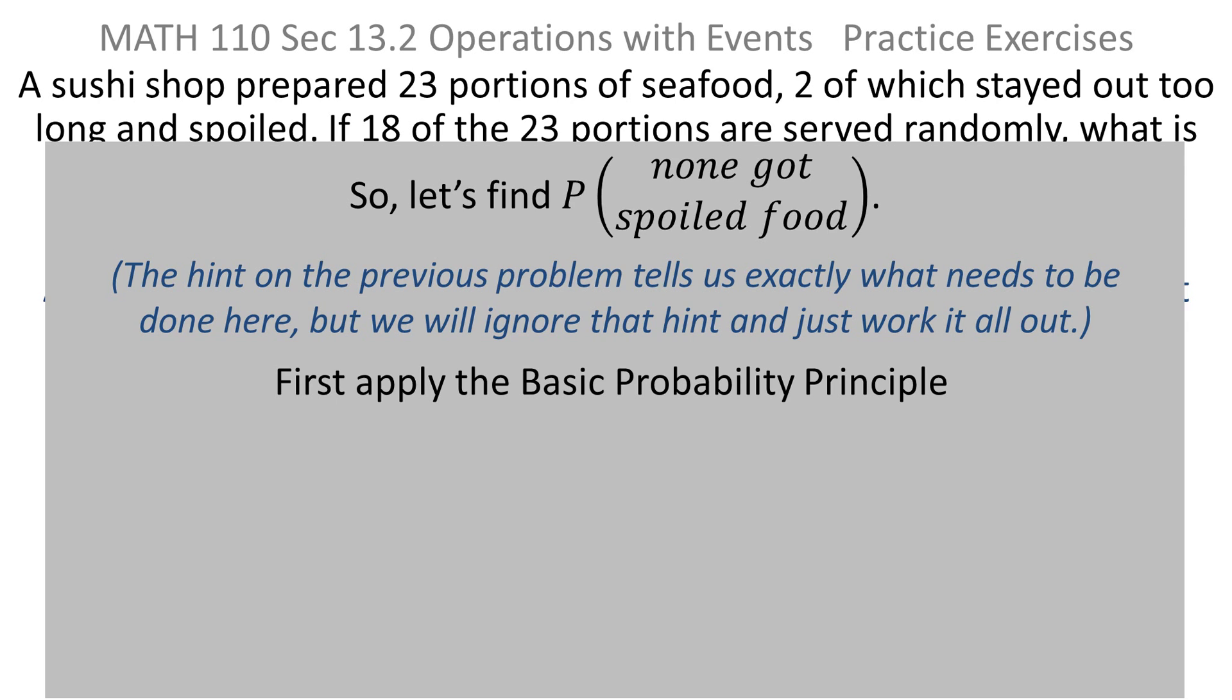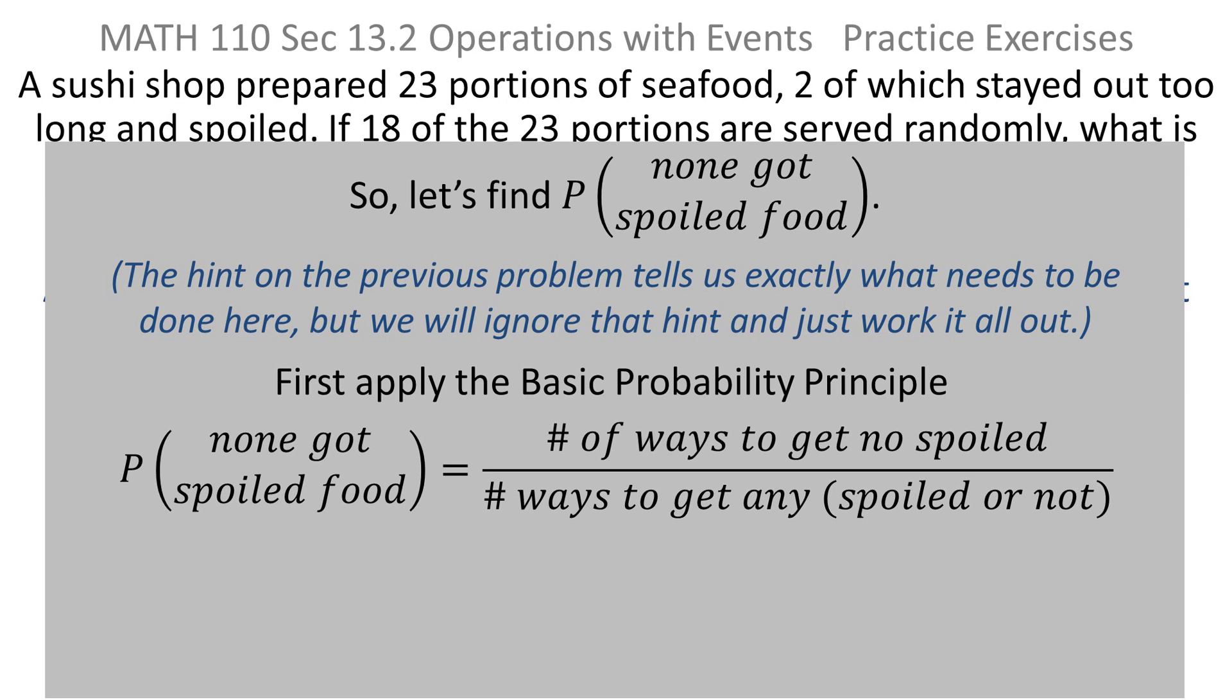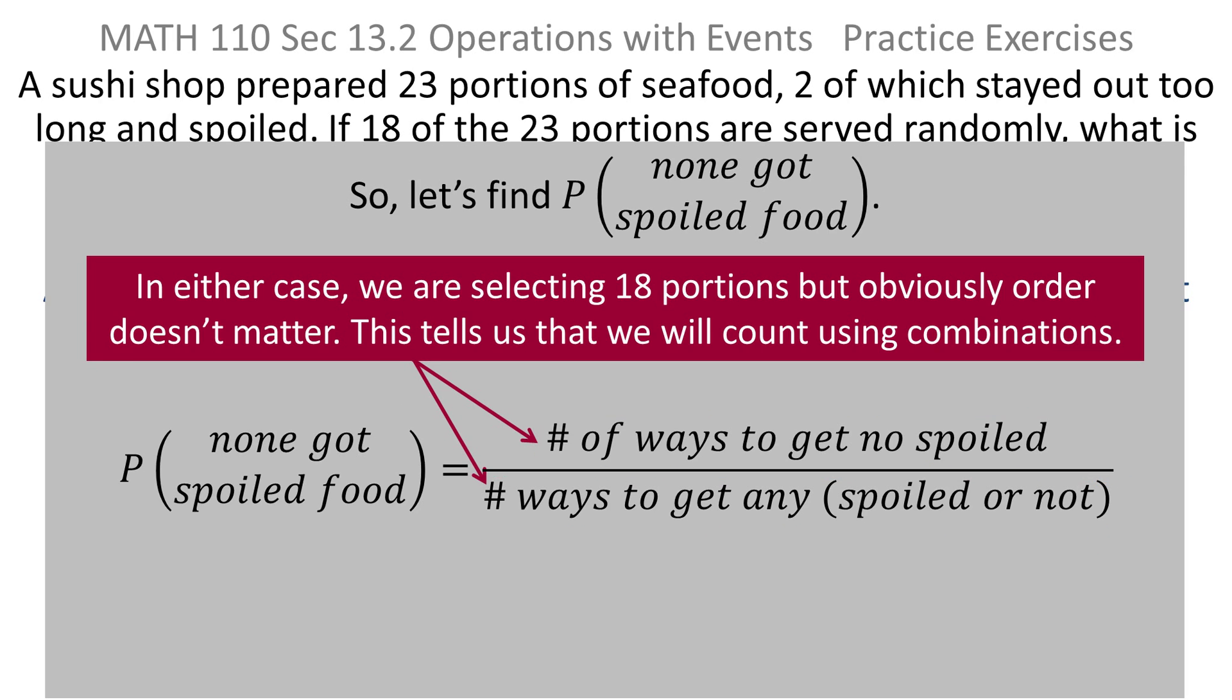We can do that by applying the basic probability principle, which says that the probability that no one got spoiled food is simply the number of ways to get no spoiled food over the number of ways to get any, whether it's spoiled or not. That's the basic probability principle. In either case, we're selecting 18 portions. But order doesn't matter, so that tells us that it's a combination.